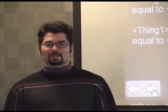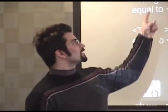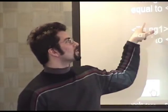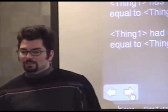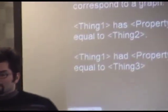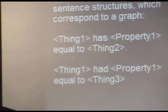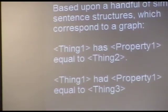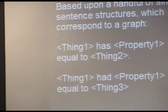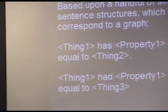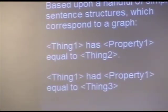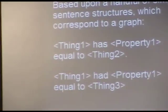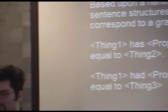An example sentence might be: 'Thing one has property one equal to thing two.' That's one of the basic hard-coded sentences. You can also do it in the past tense.